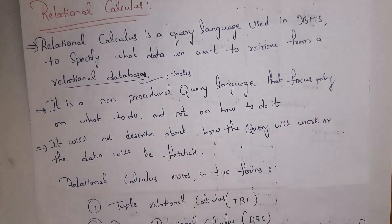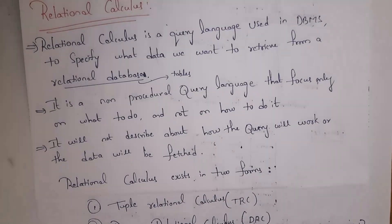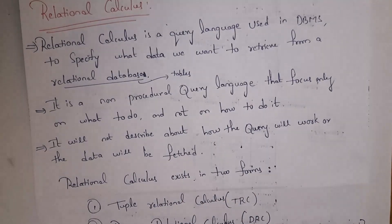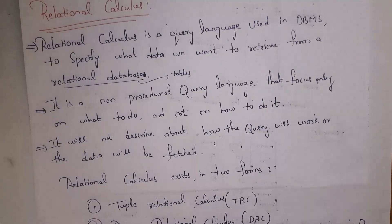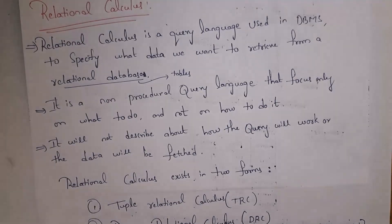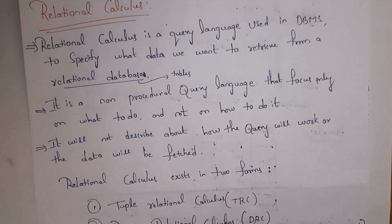Relational calculus is a non-procedural query language that focuses only on what to do and not how to do it. If you consider relational algebra, relational algebra is a procedural query language, meaning it focuses both on what to do and as well as how to do it. Whereas relational calculus is non-procedural, meaning it focuses only on what to do and will not specify how to do it.